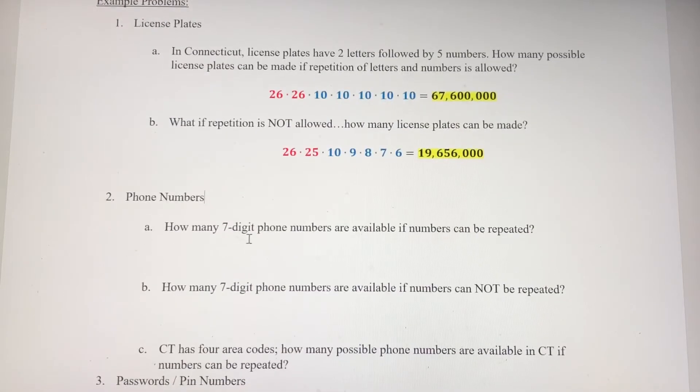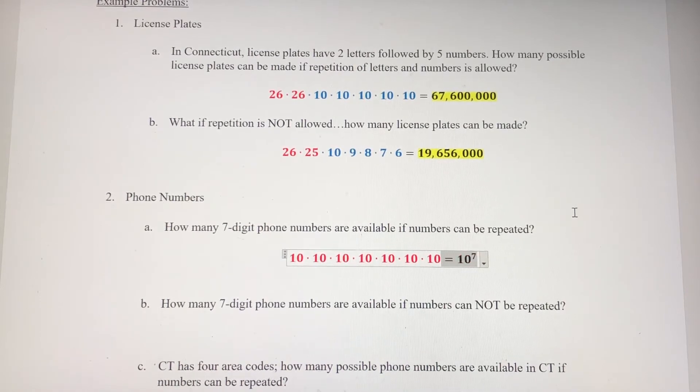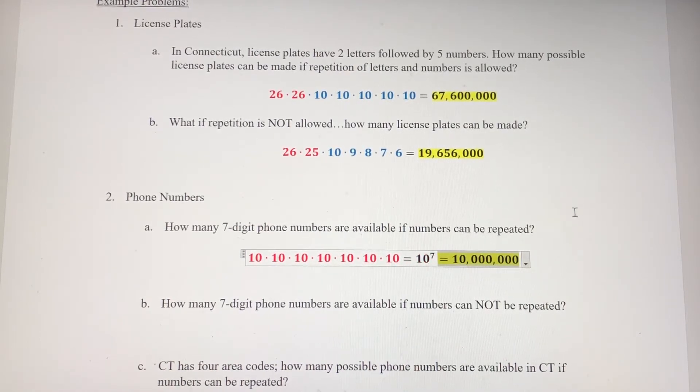Phone numbers, seven digit phone numbers. If numbers can be repeated, again, I'm going to go through these pretty quickly. So any value, the first number, the second number, so on, there's 10 options for each of those. So we're going to have 10 to the 7th power as our possible phone numbers, which is 10 million.